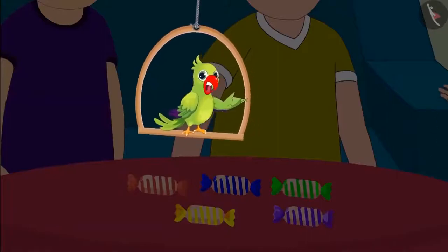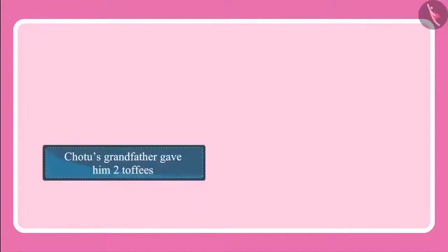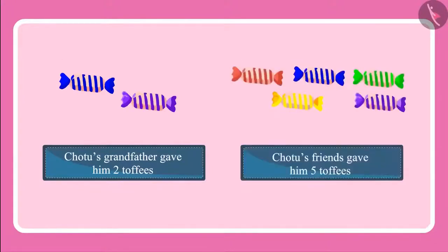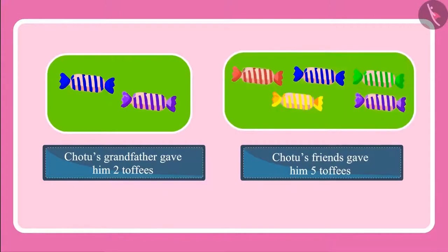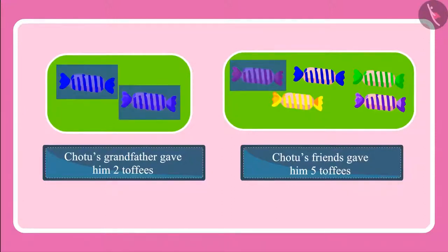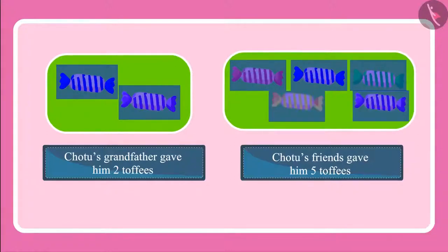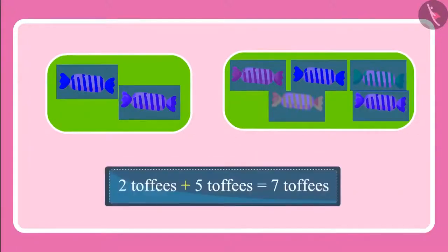Come, let's see. Chotu's grandfather gave him two toffees, and his friends gave him five toffees — two toffees and then five more toffees. Come children, let's count and see: one, two, three, four, five, six, seven. This means Chotu now has seven toffees with him.